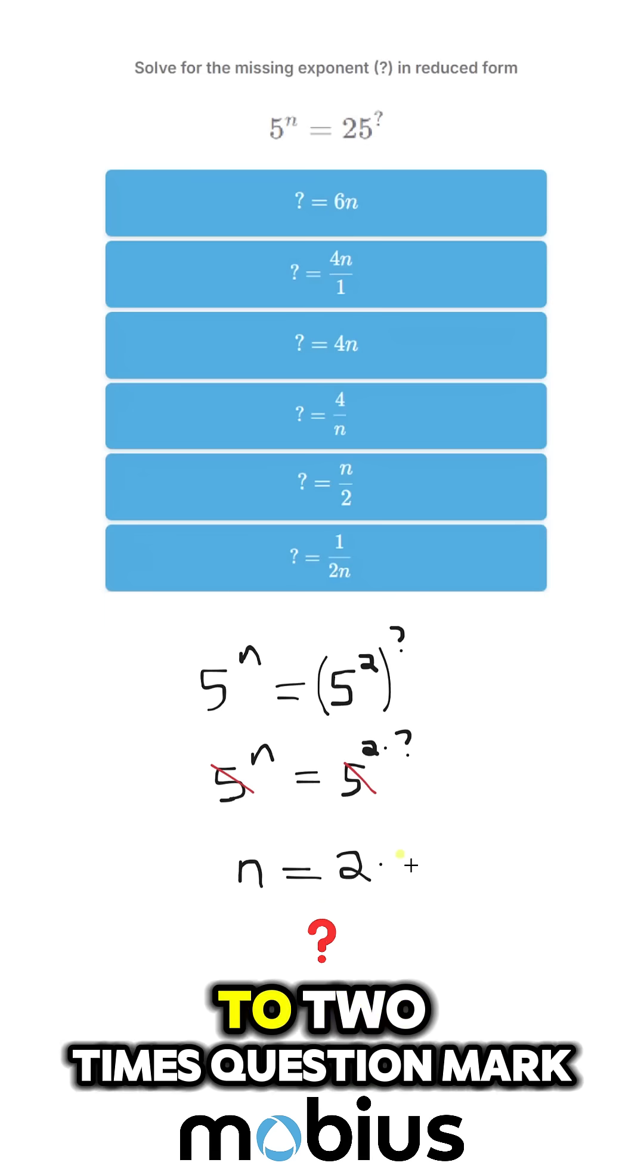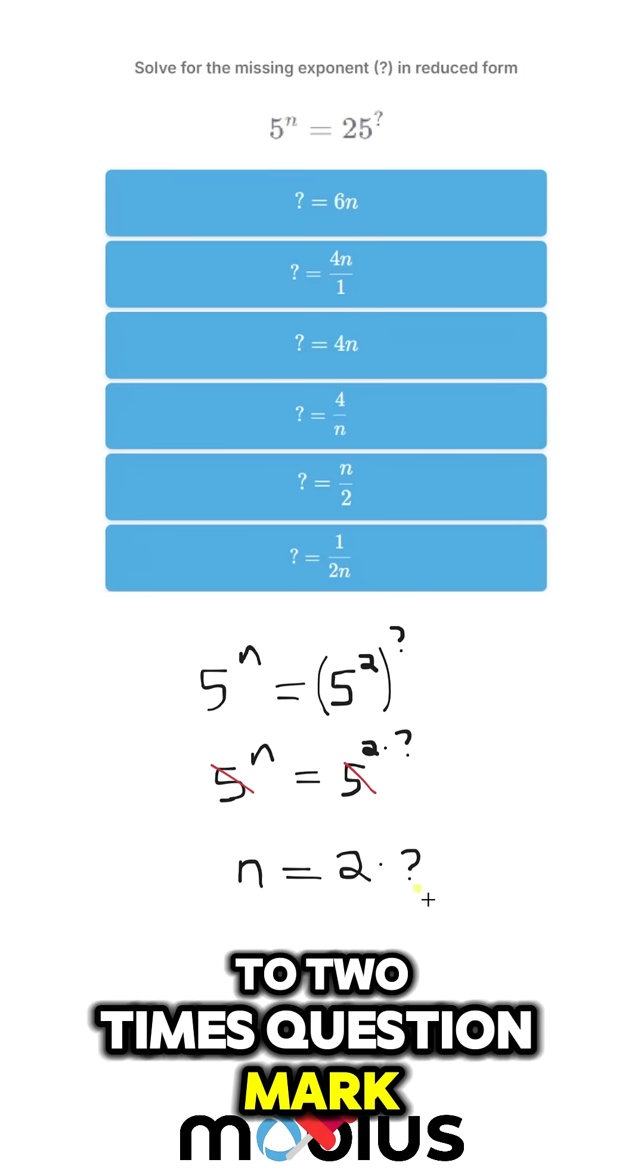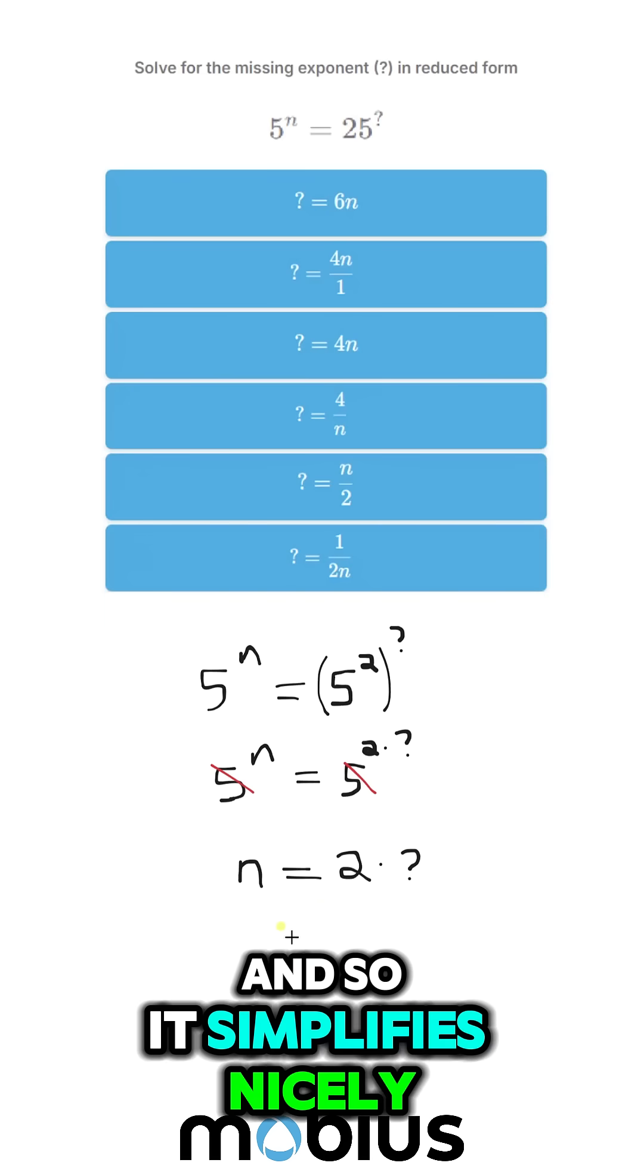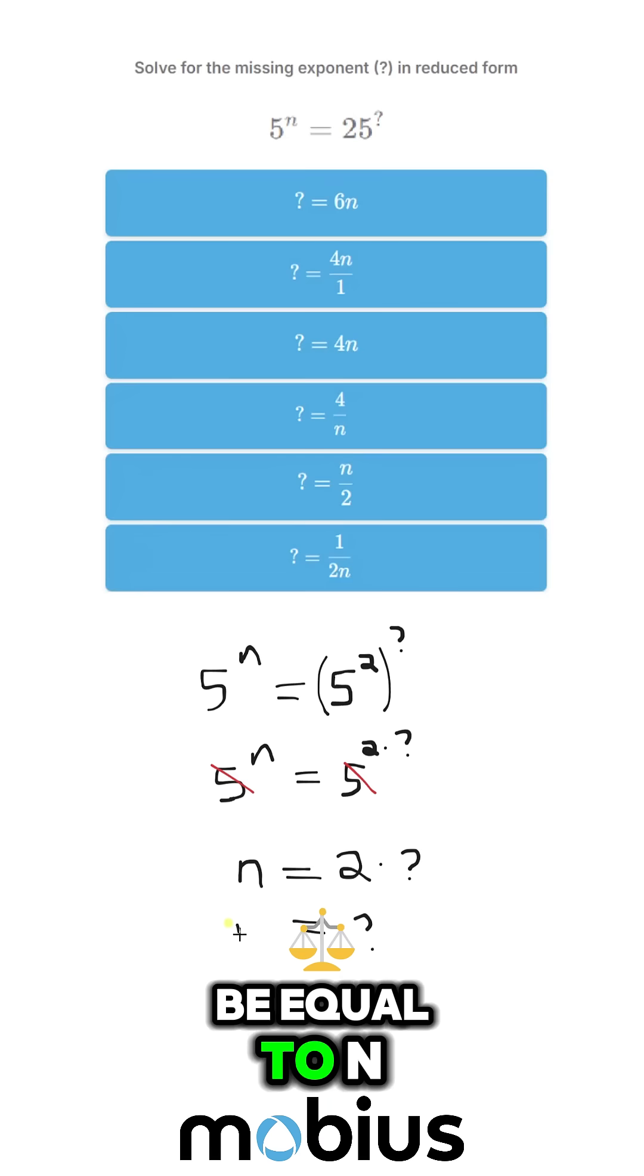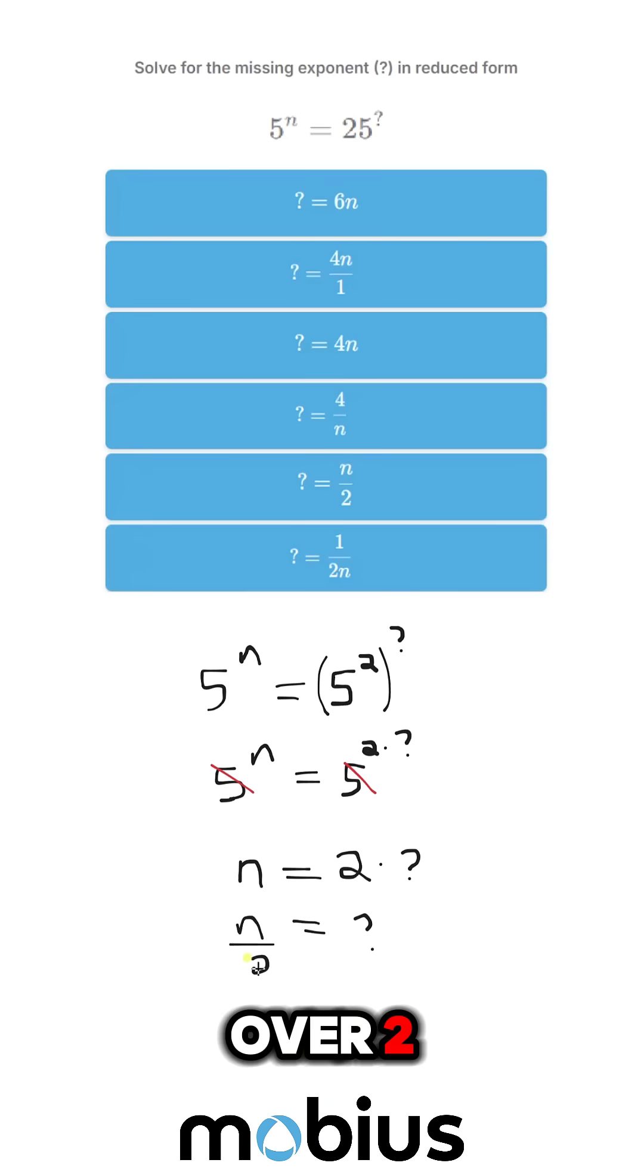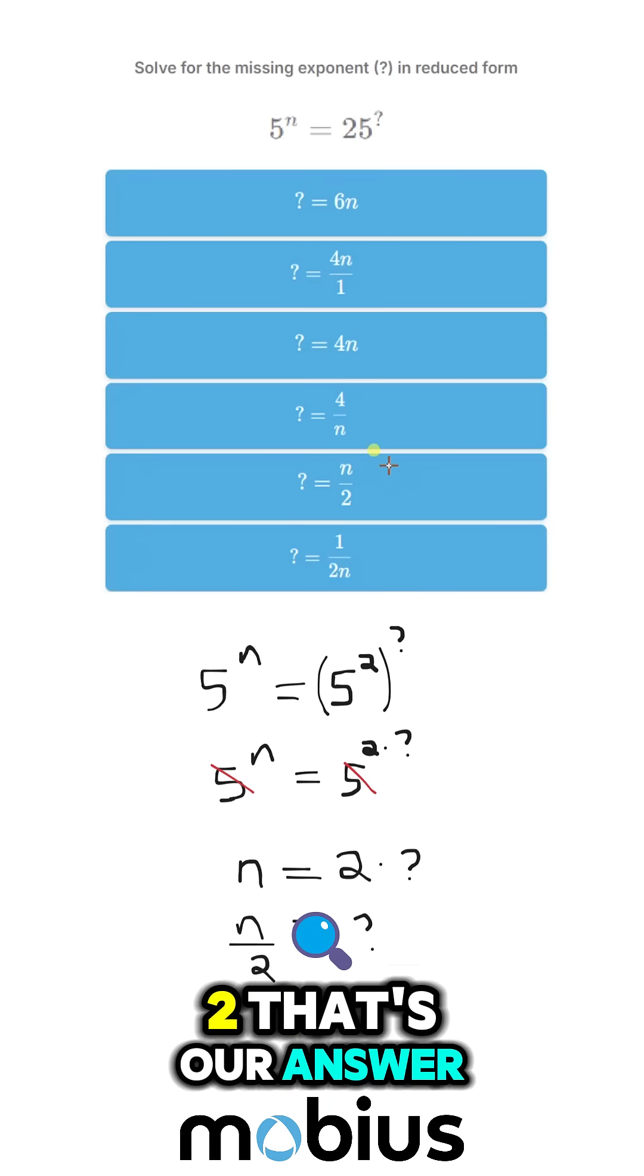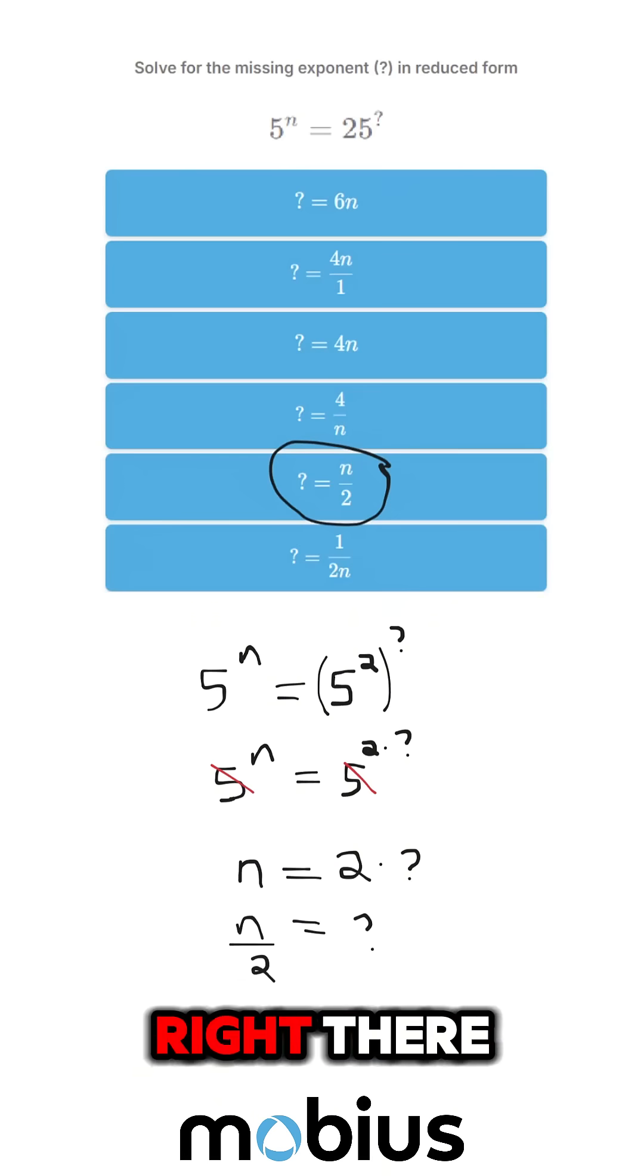So n is equal to 2 times question mark, and it simplifies nicely from there. Question mark is going to be equal to n over 2. Divide both sides by 2, that's our answer.